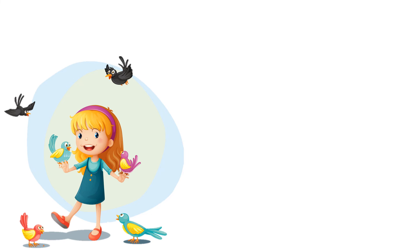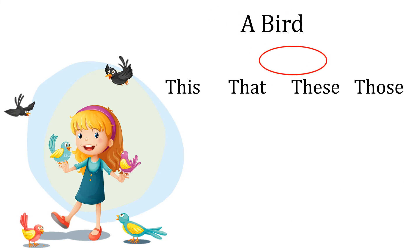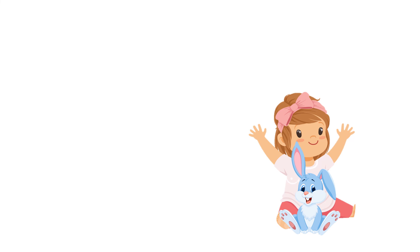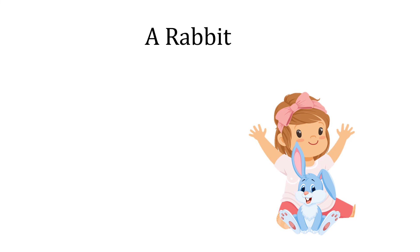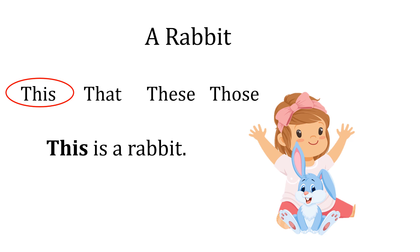What about these birds? Is it one or more than one? They are more than one. Are they near or far? They are near. So I'll say 'these' — 'These are birds.' What do you think about this cute rabbit? It's a rabbit. Is it near or far? It's near. Is it one or more than one? It's only one. So I'll say 'this' — 'This is a rabbit.'